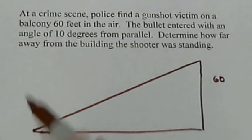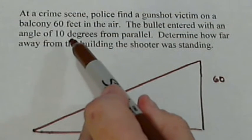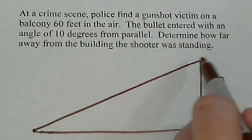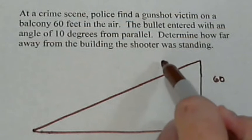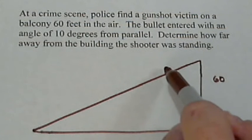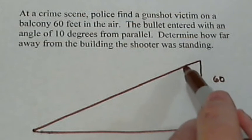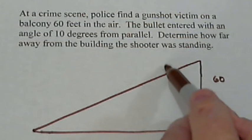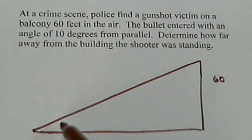Now when we say that the bullet entered with an angle 10 degrees from parallel, that would mean parallel would be out here, so this is a drop of 10 degrees. And by one of our geometry properties, if this angle is 10 degrees then we know that this opposite angle down here is also 10 degrees.